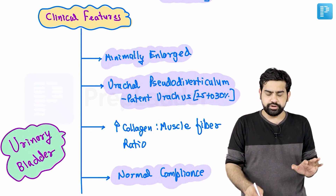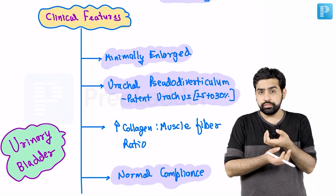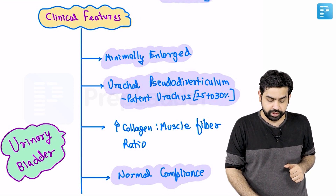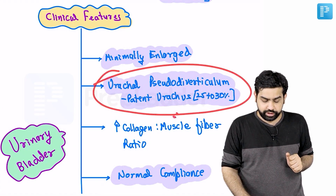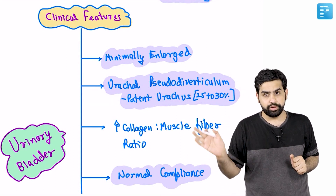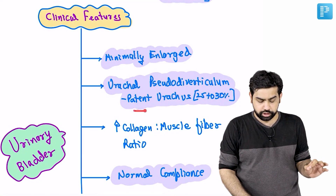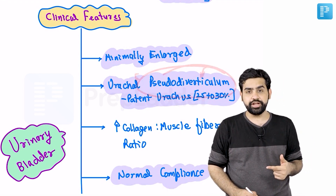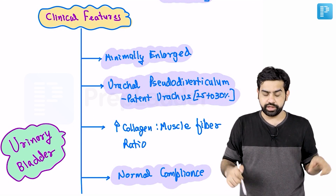The urinary bladder is usually only minimally enlarged, because the main problem lies in the ureter, not the urethra. The urachal pseudodiverticulum is an important concept: in patients with urethral atresia, the urachus normally obliterates during development, but if urethral atresia is present, urachal patency becomes the lifeline for the patient. This patent urachus, present in 25–30% of patients, is referred to as a urachal pseudodiverticulum near the dome of the bladder.